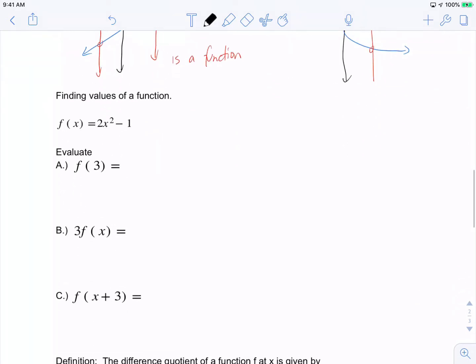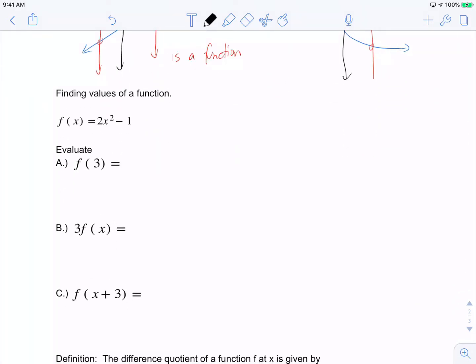Let's find values of a function using function notation. For this function, f(x) = 2x² - 1, everywhere I see x, I'm going to replace it with 3. So I get 2(3)² - 1, which is 2(9) - 1, which equals 18 - 1, which yields 17. When f(3) equals 17, we can write this as the point (3, 17).